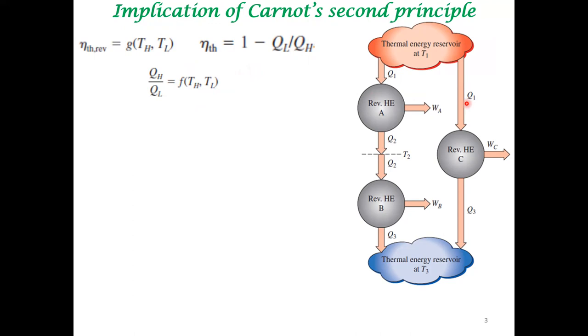Here we are imagining three heat engines. This heat engine absorbs Q1 from the high temperature reservoir, rejects Q3 to the low temperature reservoir, and generates this much amount of work. These are two heat engines operating in a particular fashion. This heat engine also takes up Q1 from the high temperature reservoir, just as this heat engine.